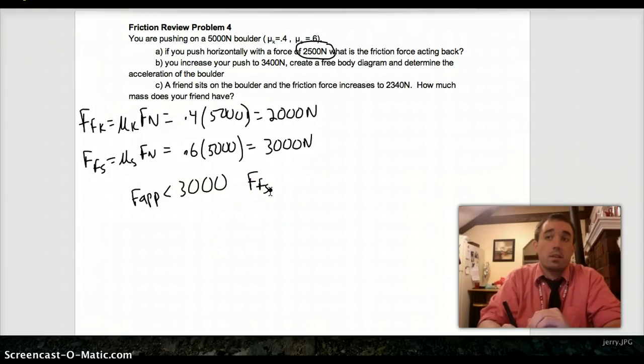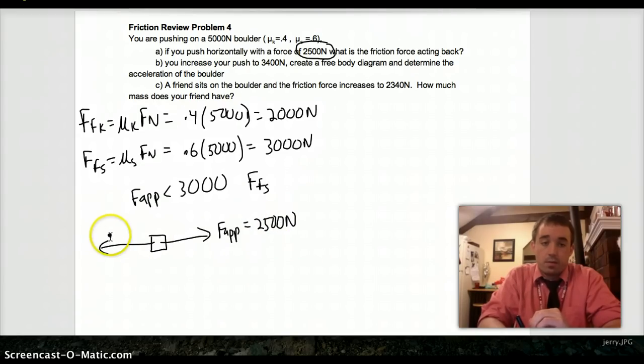Since our applied force is less than 3,000, we have only static friction. And static friction, then, it's not moving. We're pushing with 2,500. That means that static friction is pushing back with 2,500.